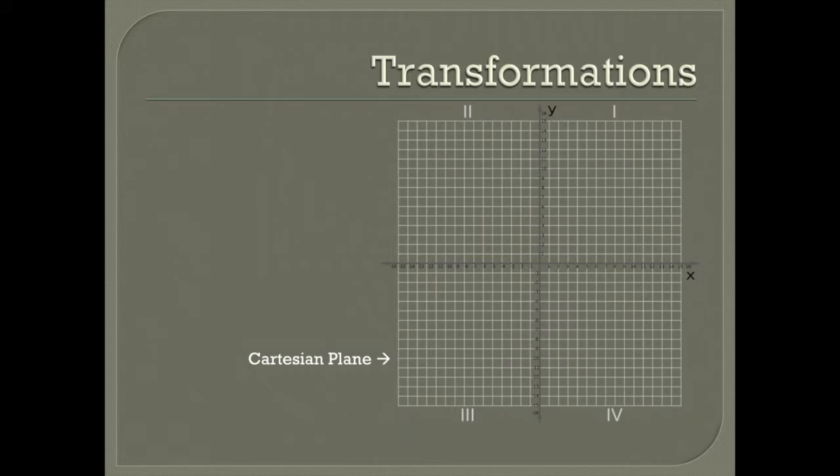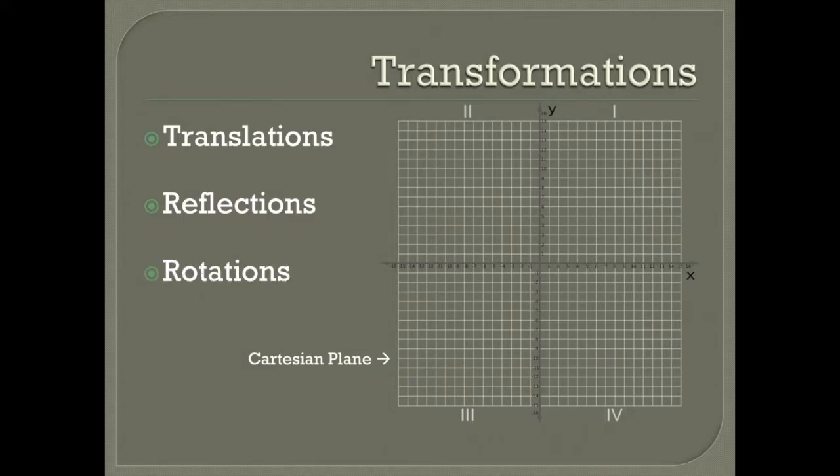There'll be three types of transformations we look at over the next couple days: translations, which is just simply taking a point and moving it somewhere else; reflections, taking a point and reflecting it like a mirror over a certain line or another spot on your Cartesian plane; and finally rotations, where you have a point or a shape and another fixed point that you rotate that shape around to get different locations. We're going to tie this back into how we can create symmetry using these types of transformations.